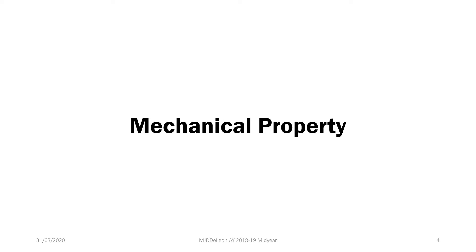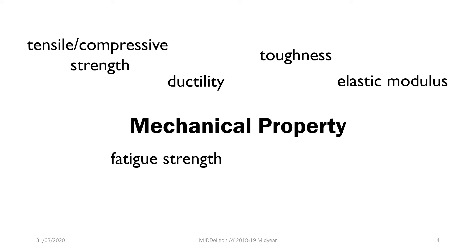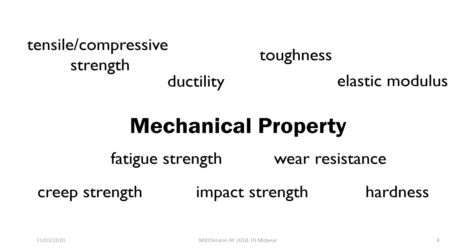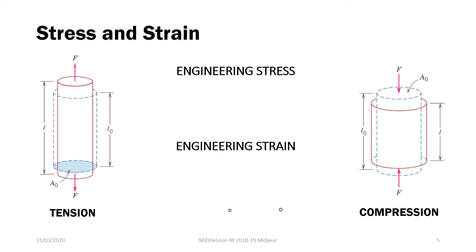So, mechanical properties. The different kinds of mechanical properties are your strength — so pedestrian tensile or compressive strength — you have your ductility, toughness, elastic modulus, fatigue strength, wear resistance, creep strength, impact strength, hardness, and so on. All of these are under the umbrella that we call the mechanical property of your material.